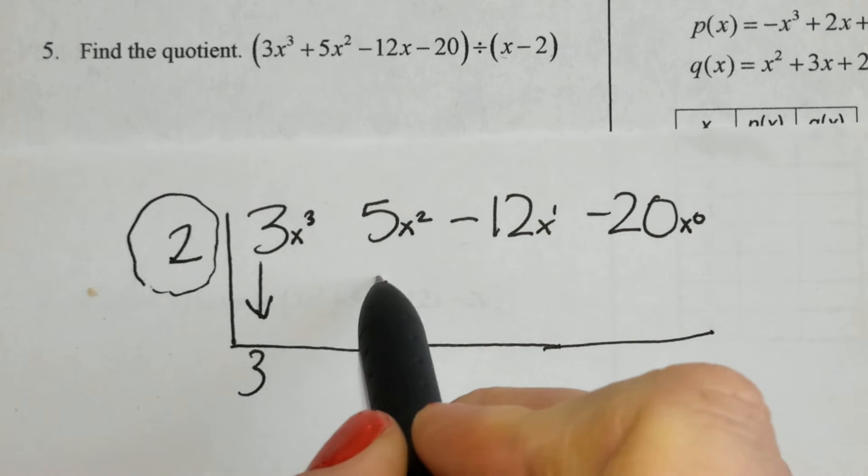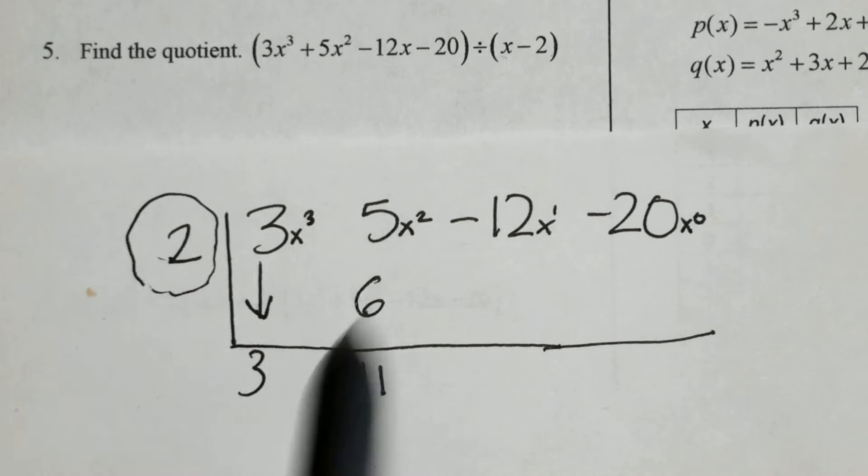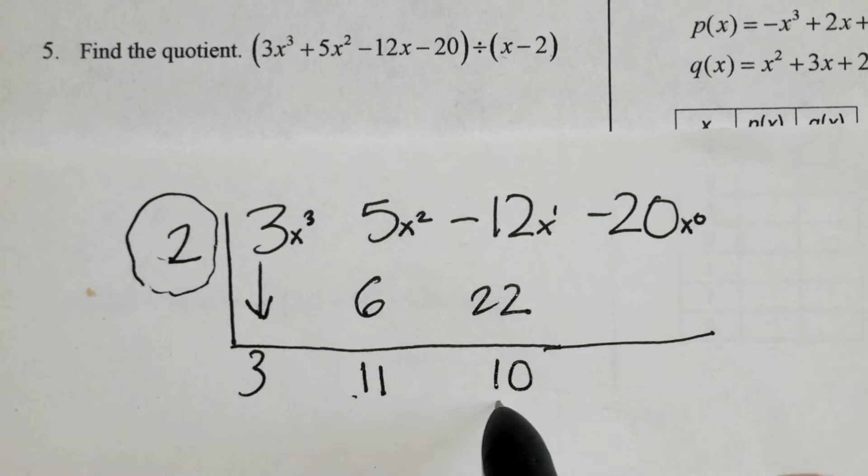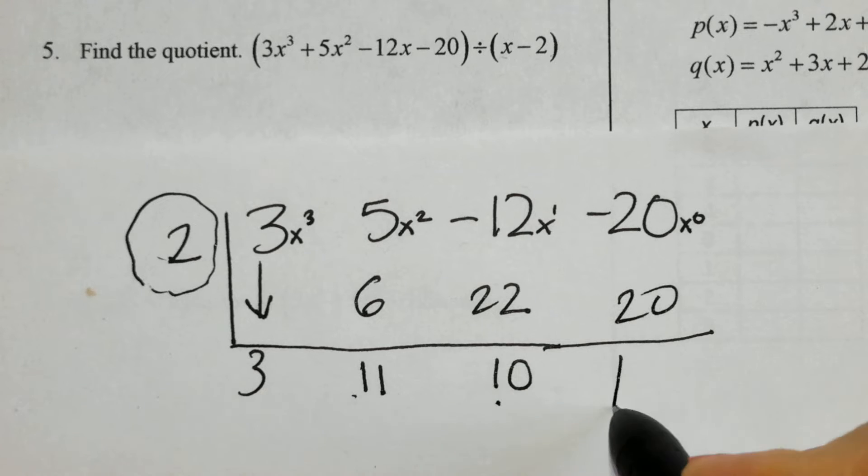Multiply to achieve 6. Add down for 11. Multiply for 22. Add down for 10. Multiply for 20. Add down for 0.